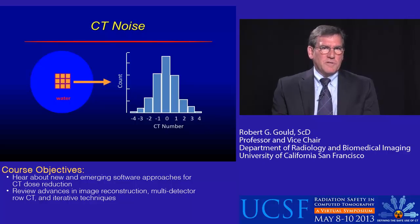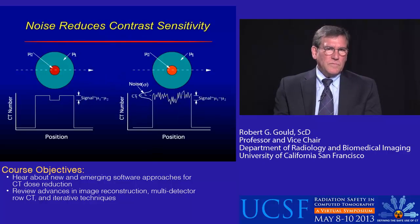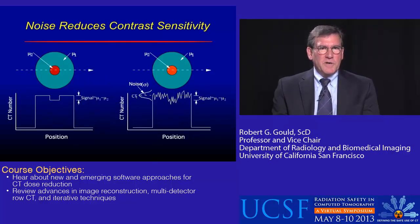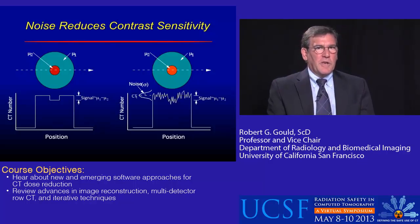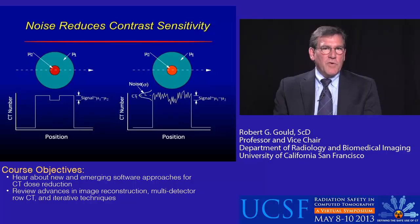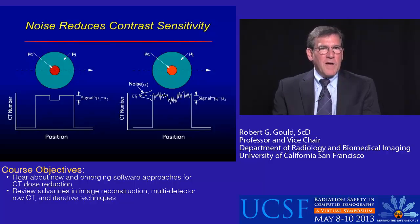So why does noise hurt us? Noise hurts us because it decreases our ability to see subtle differences in attenuation. If you look at a noise-free image where the signal is a small object within another object with two different attenuation values, the signal is simply the difference in those attenuation values.